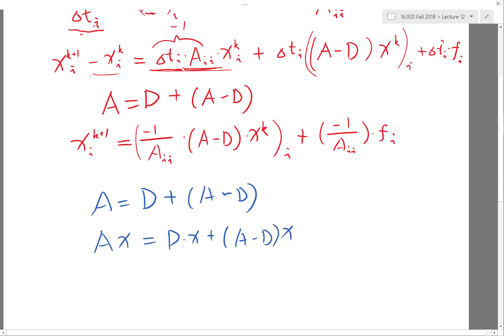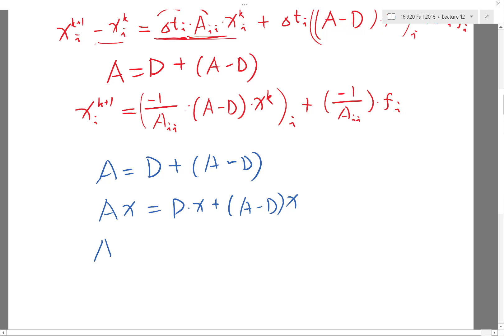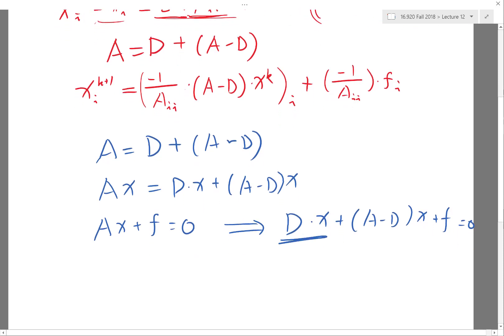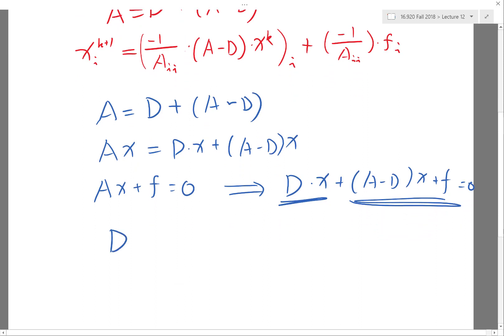So A times x would now be D times x plus (A - D) times x, right? And Ax + f = 0 is just going to be D times x plus (A - D) times x plus f = 0. And I can move the diagonal part and the rest into different sides of this equation. So D times x would now be equal to minus (A - D)x minus f.